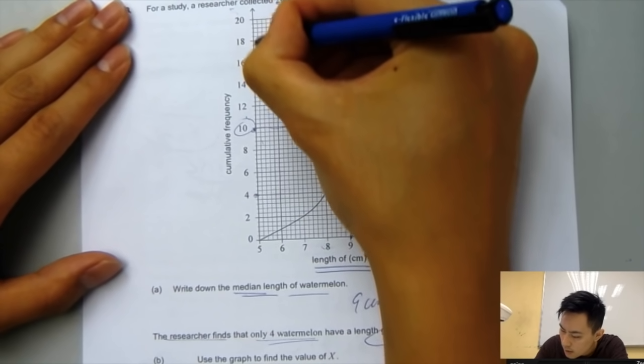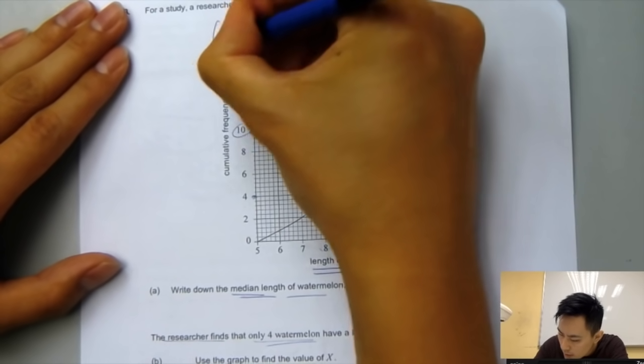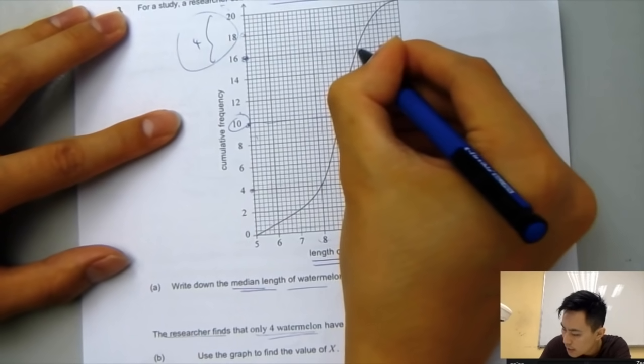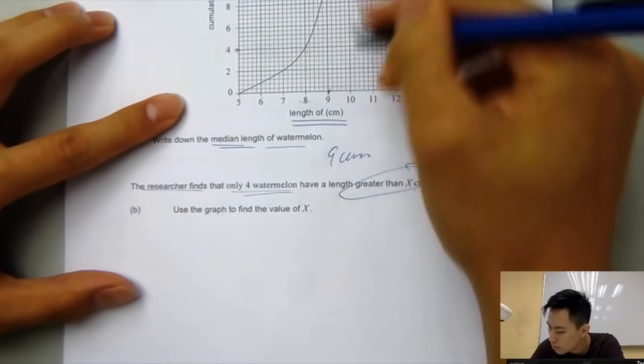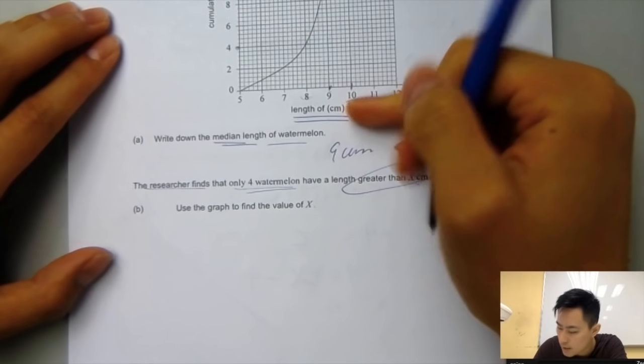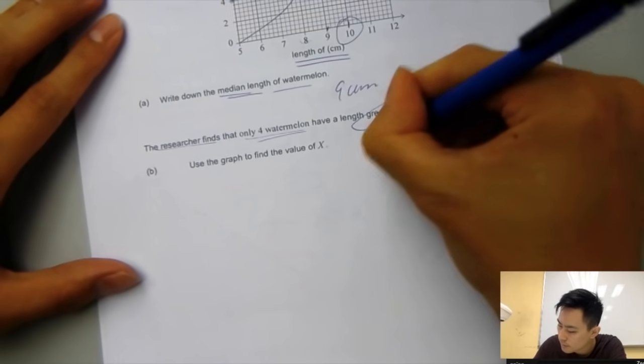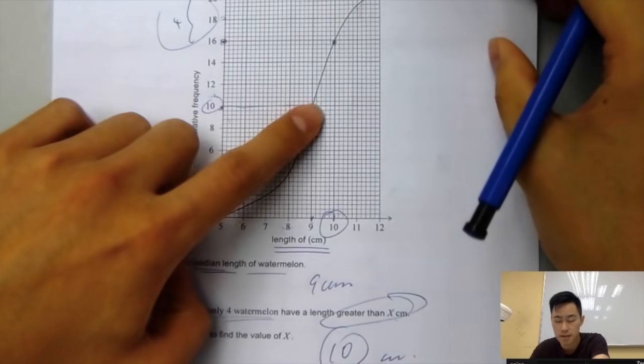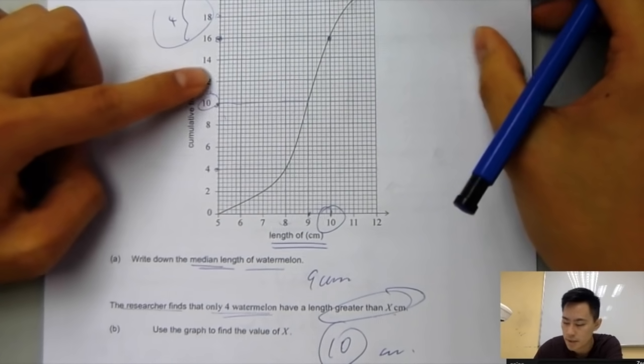That's 20, 18, and 16, so that is the 4 people that's greater than x cm. You draw a line from 16, so that's the technique. Draw down from here, then you'll get 10 cm. This is very commonly tested in the IB math studies exam. You need to be able to master the skills.